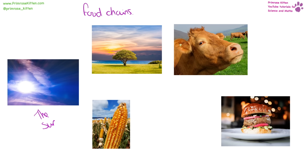All food chains start in the same place with the sun providing energy. From this energy things are going to grow, mainly plants, and they get eaten by other things — whether it's grass being eaten by cows and then going on to be eaten by us, or whether we eat the plants directly, or whether the corn is being turned into corn syrup which is used in ketchup. Whether we eat them directly or process them, we are a top consumer, whereas things like cows are herbivores because they just eat plants. The direction of the arrow in food chains means 'eaten by'.